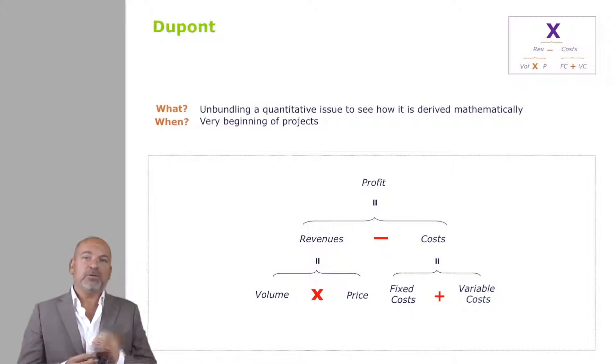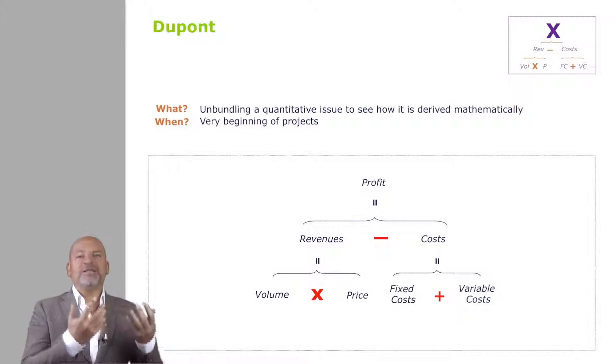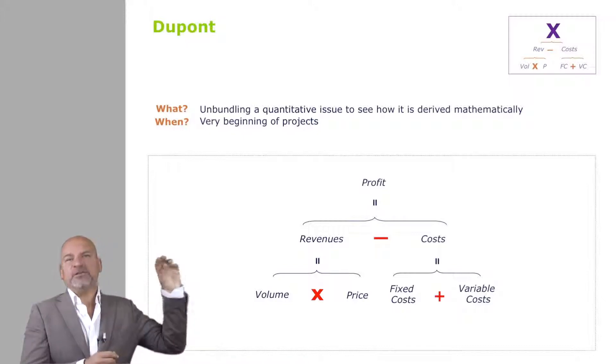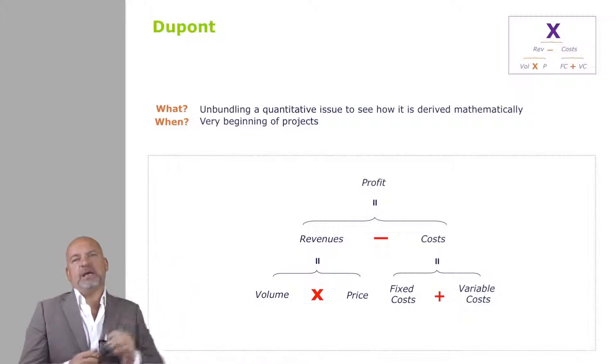And the real benefit of DuPont is to help you tease out the structure of a quantitative problem where there is a metric at the top that you're really looking to improve.